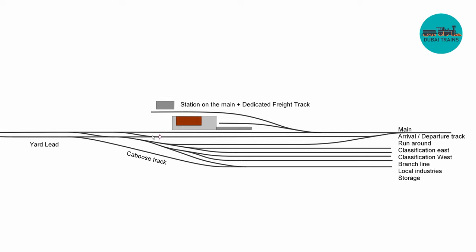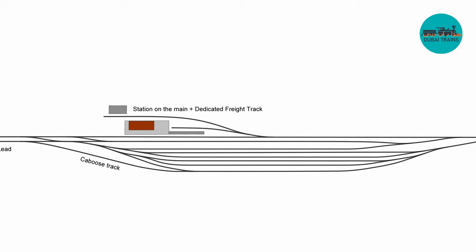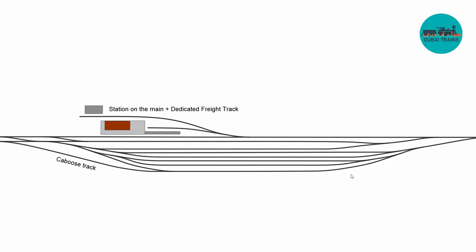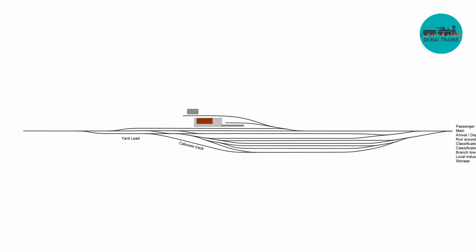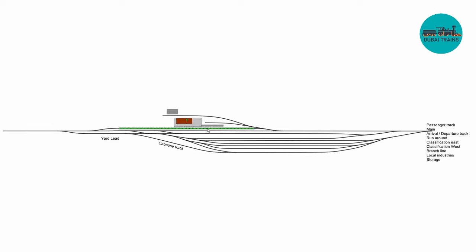We've only talked about stub-end yards — yards accessible from one direction only. Many real-world yards are actually accessible from both directions, east and west. That does take a lot of model railroad real estate, so I'd advise it only if absolutely necessary. Alternatively, you can combine the two: the first few tracks are accessible from both directions, while some stub-end tracks handle storage or classification in a particular direction. You might also want an extra siding for a passenger station.